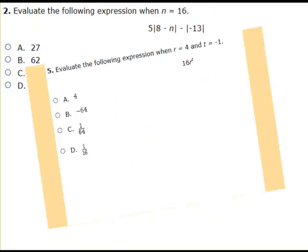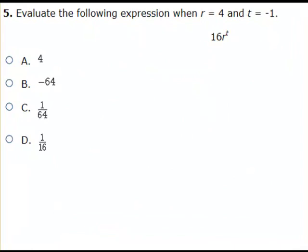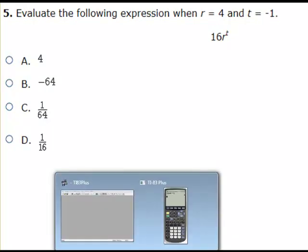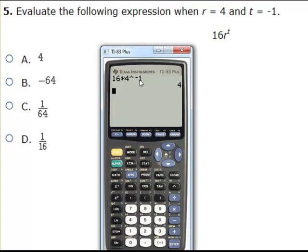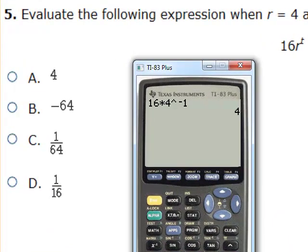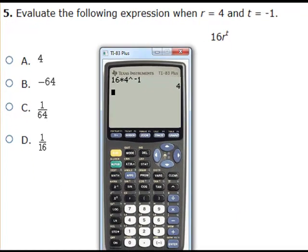Here's another problem involving evaluating — just to make sure you understand where your exponent key is. I have 16 times 4 raised to negative 1 power. The calculator understands order of operations — PEMDAS — it knows it needs to take this 4, raise it to negative 1. 4 raised to negative 1 is really 1 fourth. 16 times 1 fourth is 4, and you can see that when I hit enter. Another easy problem that can be done without a calculator, but you can use it as a backup to check your calculations.